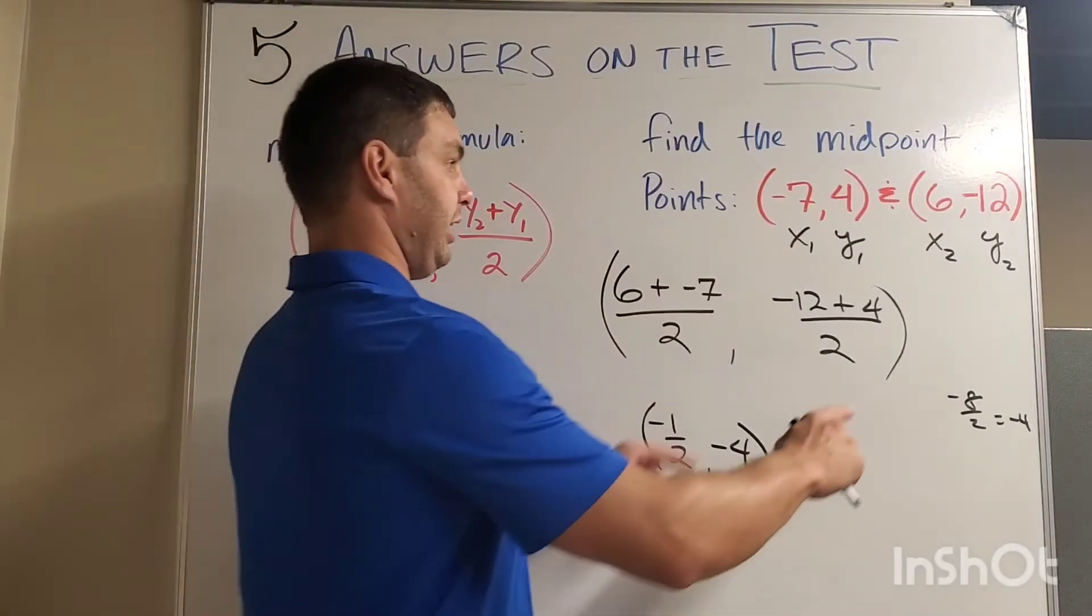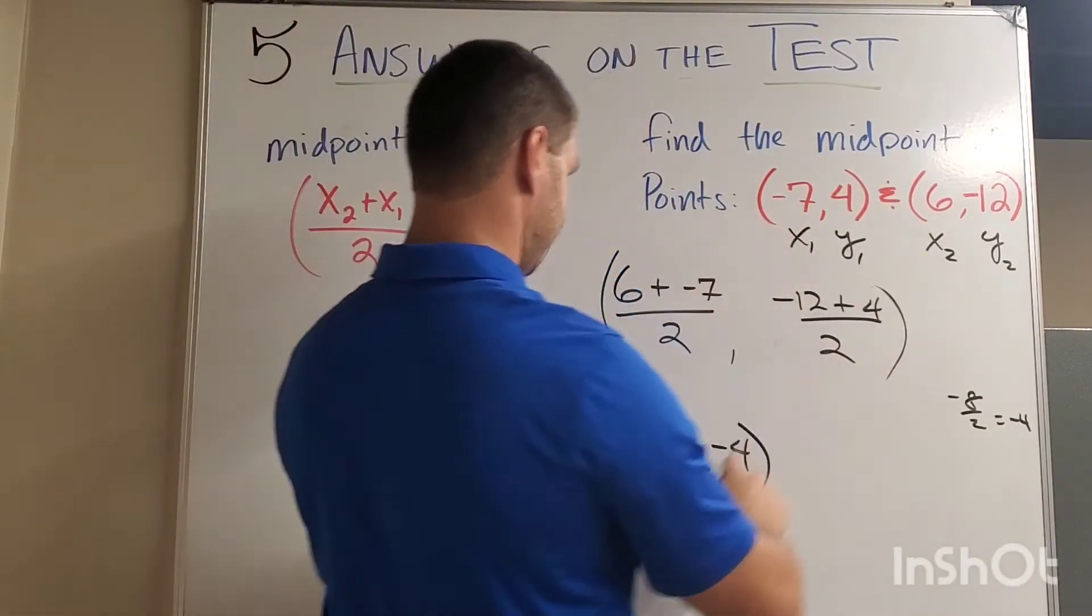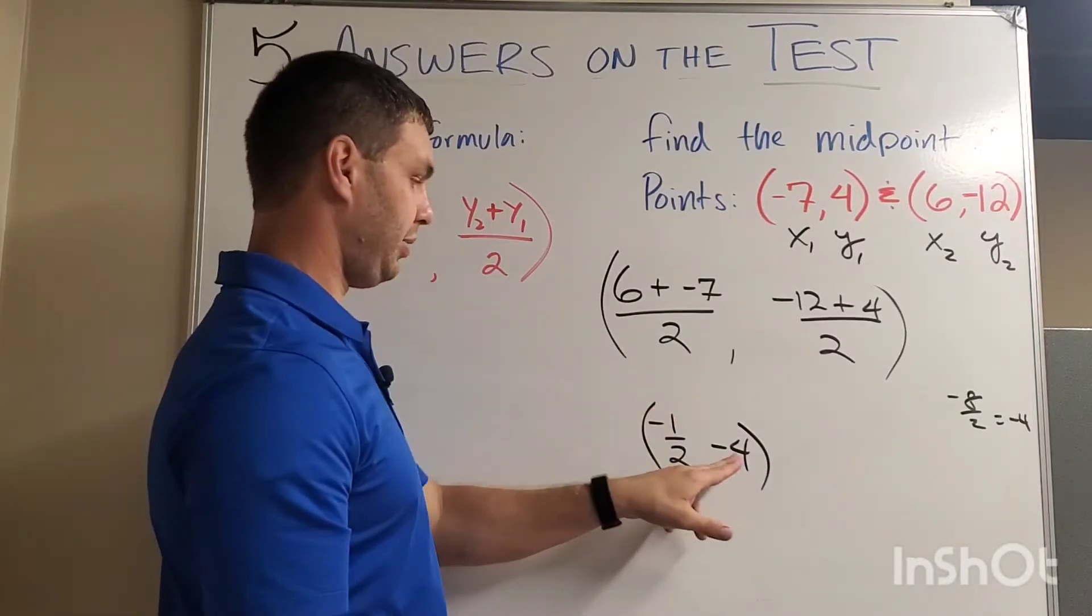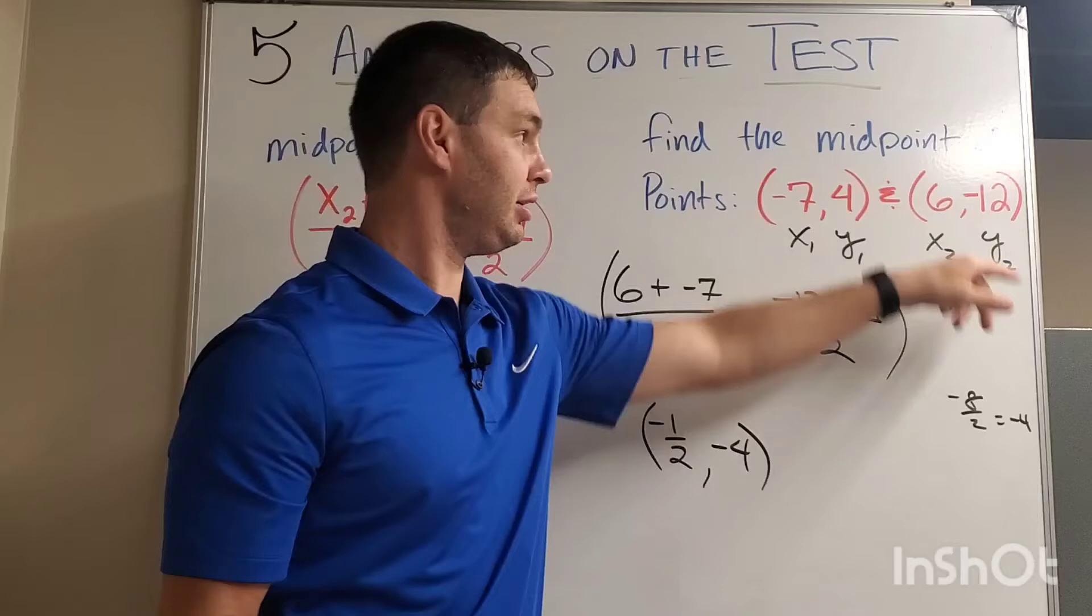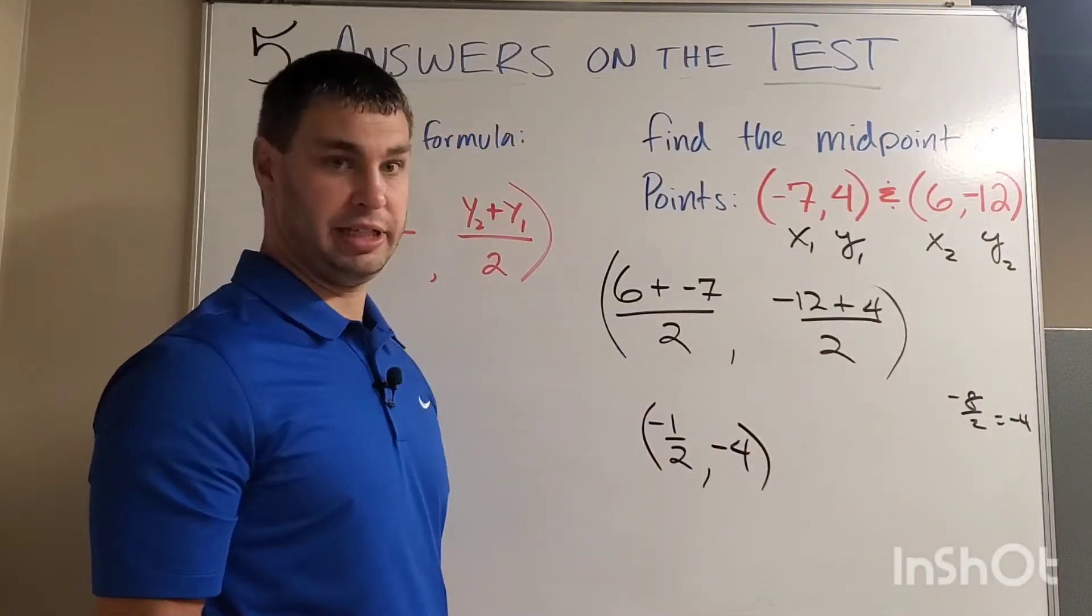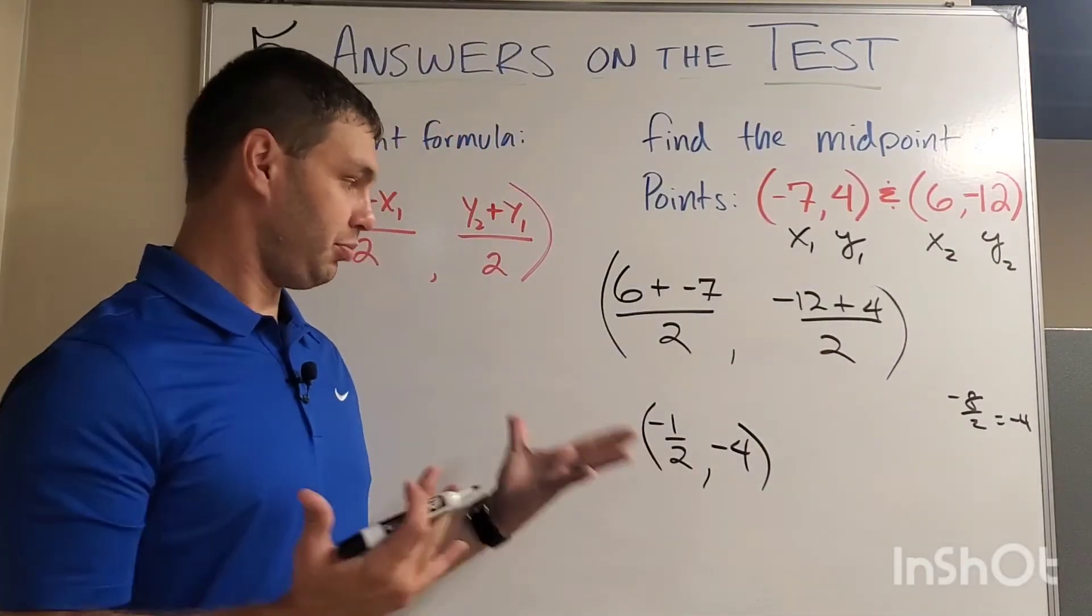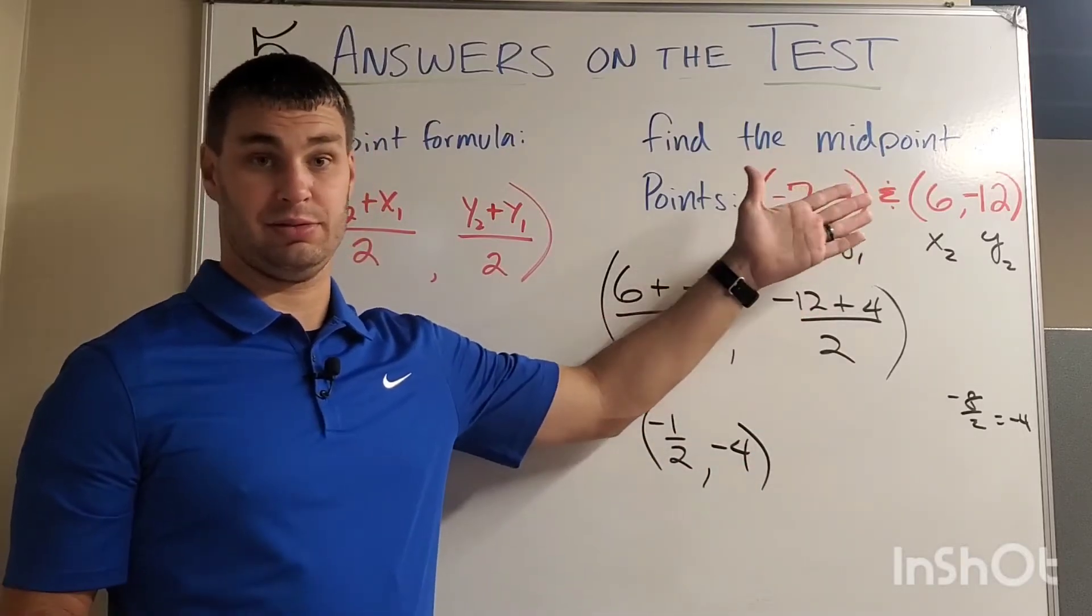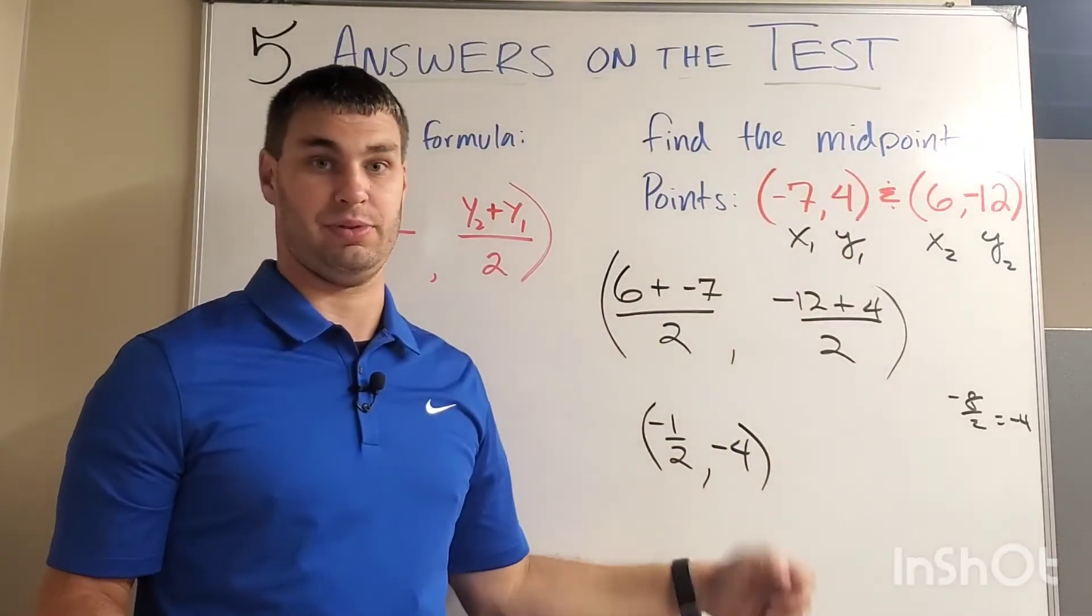And you can check it, right? You can check it in between negative seven and six should be negative one half. It is. What about negative four? Is that in between four and negative 12? Yeah. So, you know that you did it probably right if those two end up between the two points that you were originally given since this is the midpoint formula.